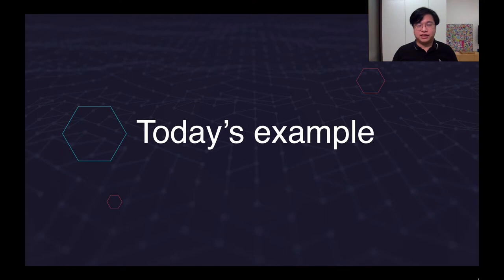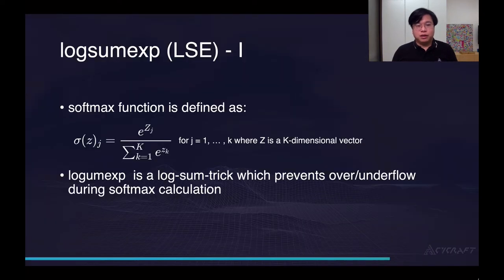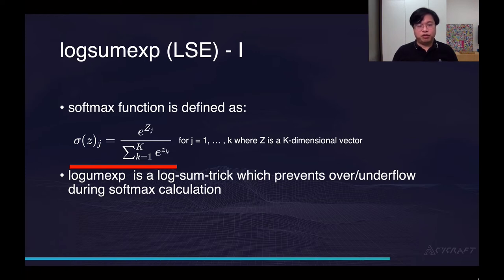Let's have a look at today's example, which will be used as a benchmark for the rest of the talk. If you are not new to machine learning, you must know what the softmax function is. The formula is just like the one on the screen. All you have to know is that it's a number divided by the sum of a lot of numbers. The formula itself looks easy to implement in Python, but if you try to implement it directly, you will easily encounter a numerical problem. In computer science, we call it the underflow or overflow issue. On the next slide, I will give you an underflow example. To avoid this situation, a trick called log-sum-exponential will be used.